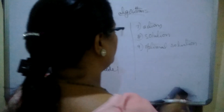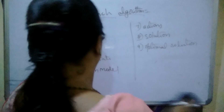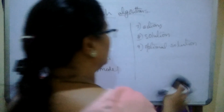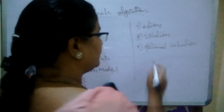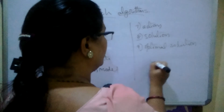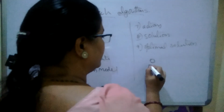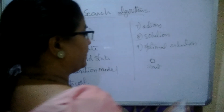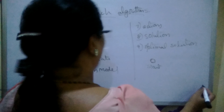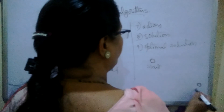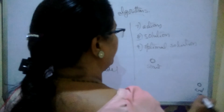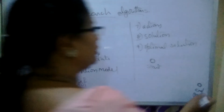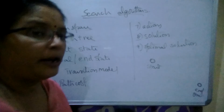The next ones are start state and goal state. Start state is a state where we begin our search — that is called the start state. Goal state or end state is a state where we end — that is called the goal state or end state.